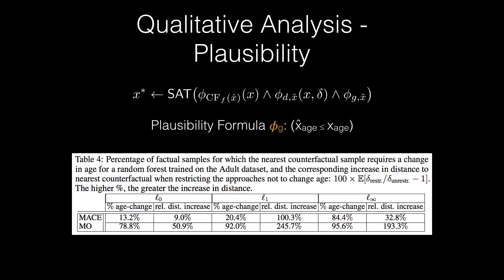As an example for a trained random forest model, the unconstrained counterfactuals generated by both MACE and MO approaches required individuals to change their age. And worse yet, for a substantial portion of these counterfactuals, a reduction in age was required, which is not even possible.